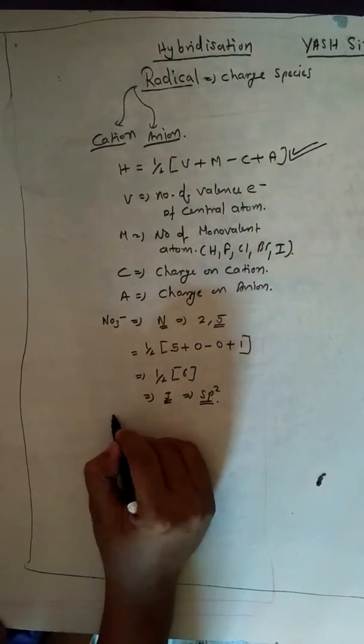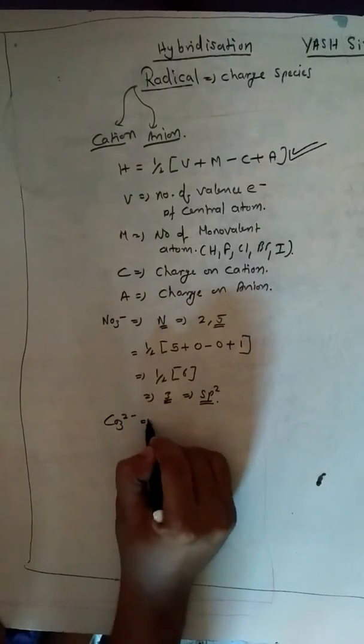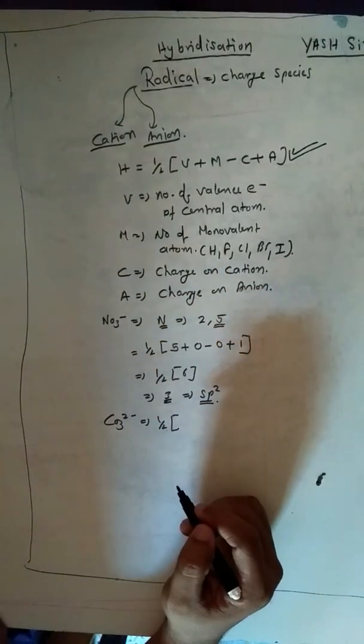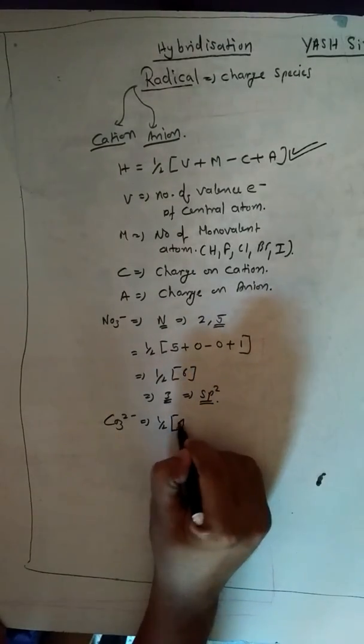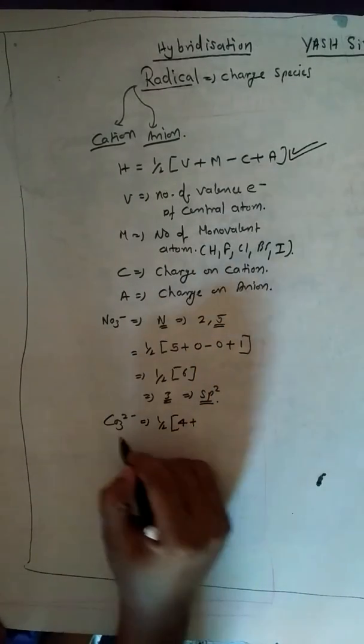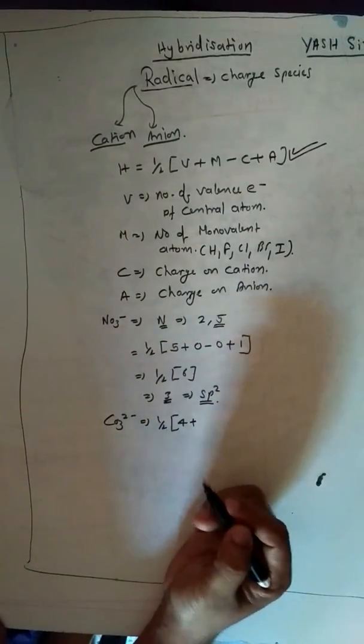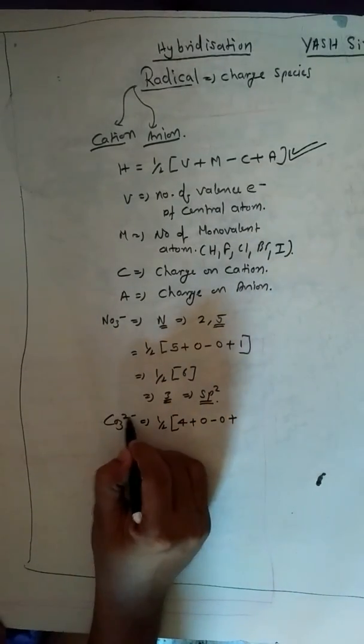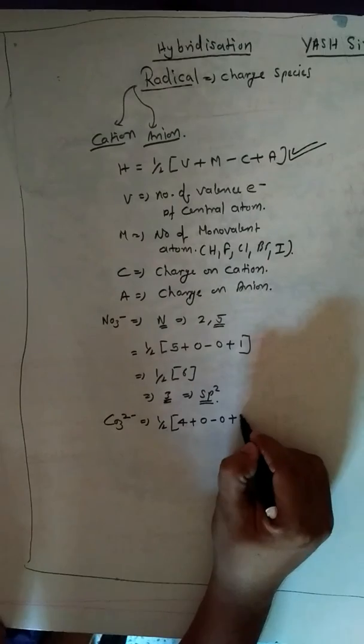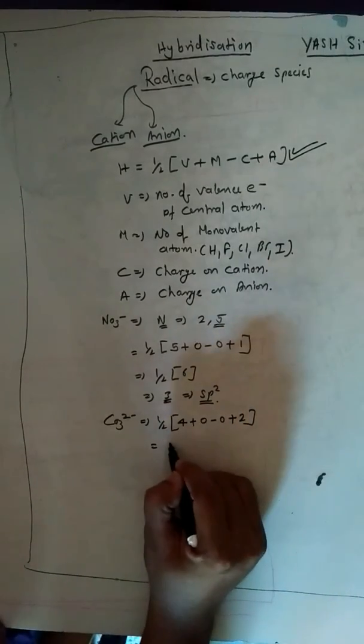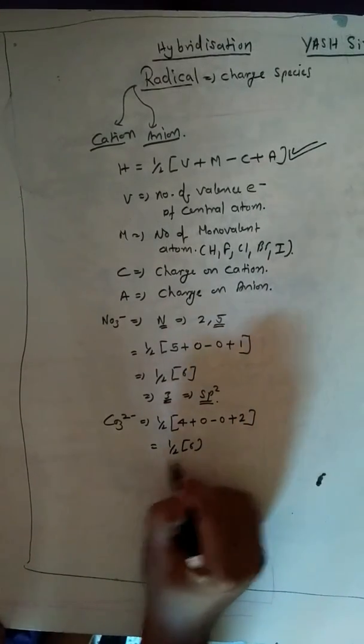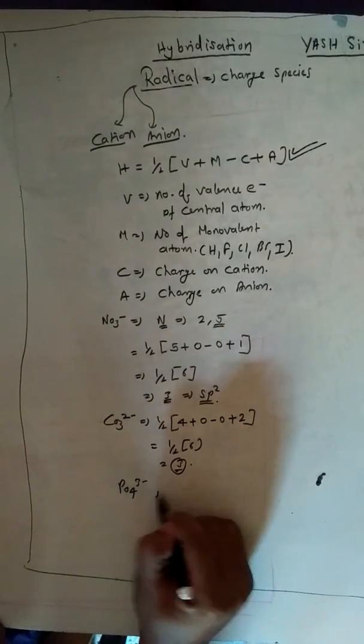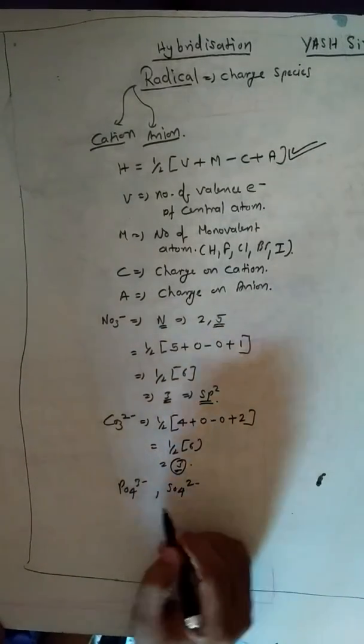You can solve many others as well. CO3 2 minus. In this case the central atom is carbon. The number of valence electrons are 4, plus there is no monovalent atom. Oxygen itself is divalent, so 0. It is not a cation. And since it is an anion, the magnitude is 2. So it will be totally 1 by 2 of 6, so it will be 3. Simply you can solve PO4 3 minus, SO4 2 minus.